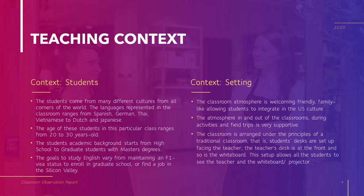Teaching Context: Students. The students in this school come from many different places around the world. The languages represented in the classroom range from Spanish, German, Thai, Vietnamese, Dutch, and Japanese. The age of the students in this particular class ranges from 20 to 30 years old. Students' academic backgrounds range from high school to graduate students with master's degrees. Their goals to study English vary from maintaining an F-1 visa status, to enrolling in graduate school, or finding a job in Silicon Valley.